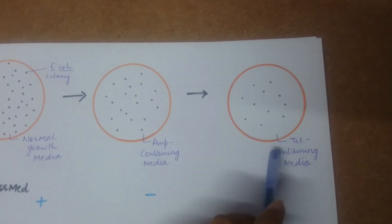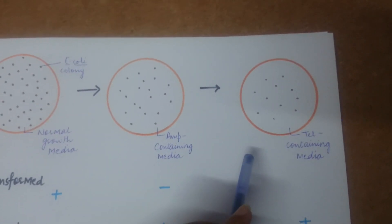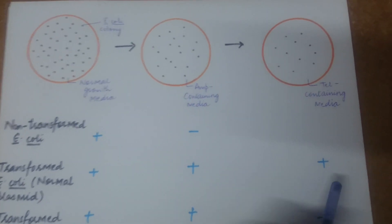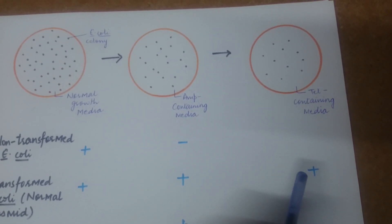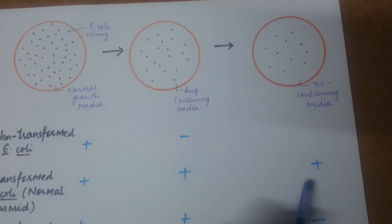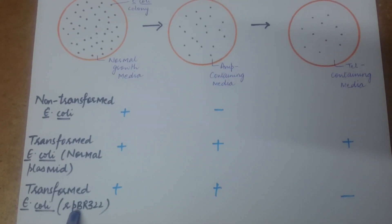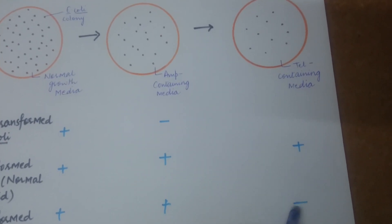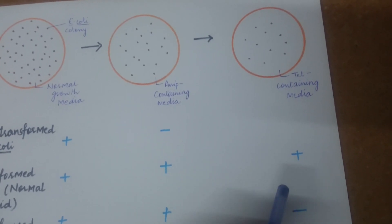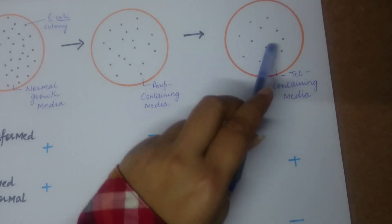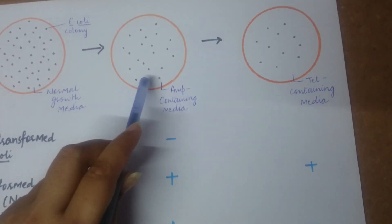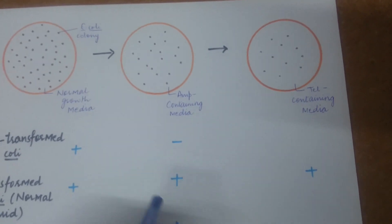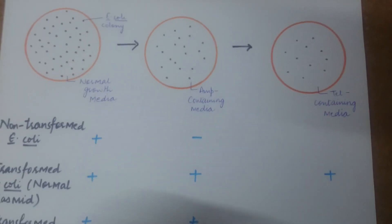When colonies from the ampicillin-containing plate are copied — not transferred, but replicated using a wooden block technique — to tetracycline-containing medium, non-transformed E. coli obviously do not grow. Transformed E. coli with normal pBR322 are able to grow because they have an intact tetracycline resistance gene. But transformed E. coli with recombinant pBR322 are unable to grow because the tetracycline gene now contains the foreign DNA insert. The points where colonies are absent can be traced back to the ampicillin plate to identify and retrieve the desired recombinant colonies. That's all for today, thank you.